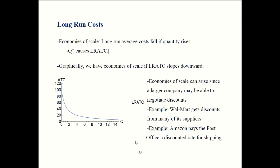We see that we have economies of scale if long run average costs fall when quantity rises. Your average total cost per unit goes down as you produce more and more units. There are several ways this could arise. Bigger companies can often negotiate special discounts for themselves. For example, it's well known that Amazon has a deal with the post office — Amazon provides the post office with a lot of business, so they were able to negotiate a discounted shipping rate compared to what the rest of us pay.